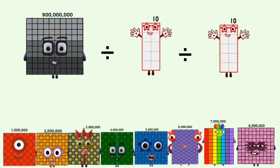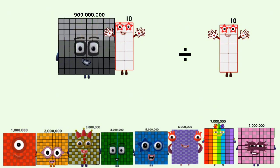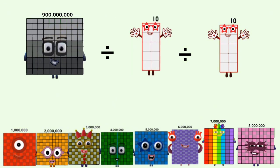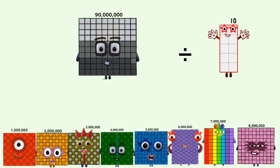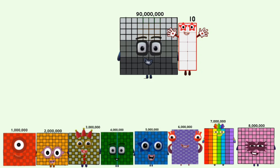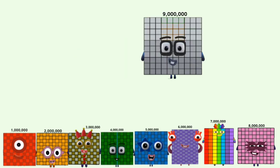900,000,000 divided by 10 equals 90,000,000. 80,000,000 divided by 10 equals 8,000,000.